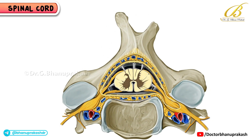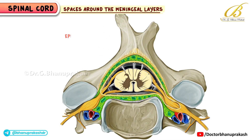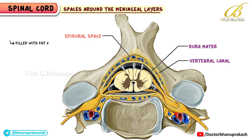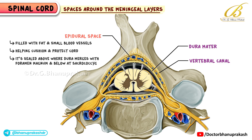Here, we explore the spaces around the meningeal layers. Epidural space: this lies between the inner surface of the vertebral canal and the dura mater. It's filled with fat and small blood vessels, helping cushion and protect the cord. It is sealed above where the dura merges with the foramen magnum, and below at the sacrococcygeal ligament near the sacral hiatus.